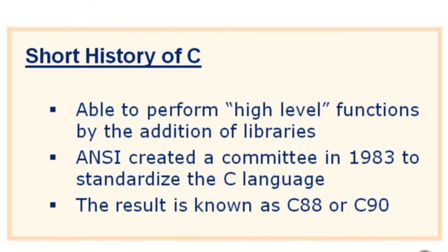More and more government work being done in C required that there had to be a C standard to get the government contracts. So ANSI created a committee in 1983 whose whole goal was to standardize the C language. They worked on that for quite a while, and the result was finally achieved in 1988 — that resulting ANSI C standard is known as C88.